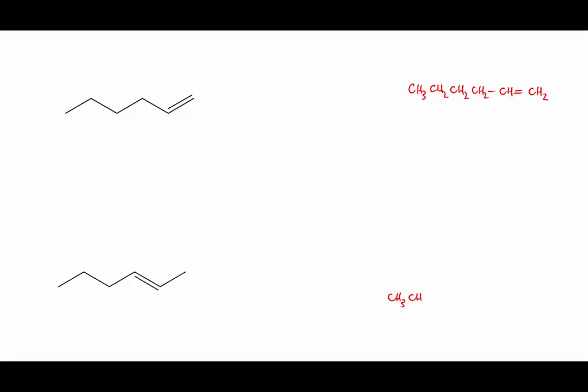They both have the molecular formula C6H12. They're alkenes. So they each have six carbons and they each have one double bond. So they're clearly both a kind of hexene. But how to indicate where the double bond is in the molecule?